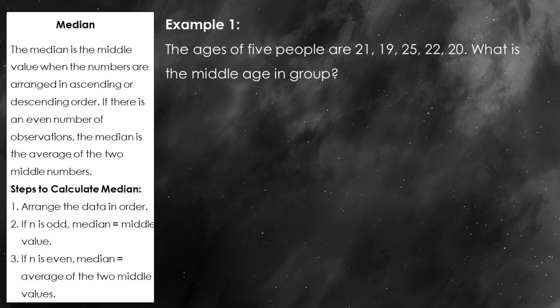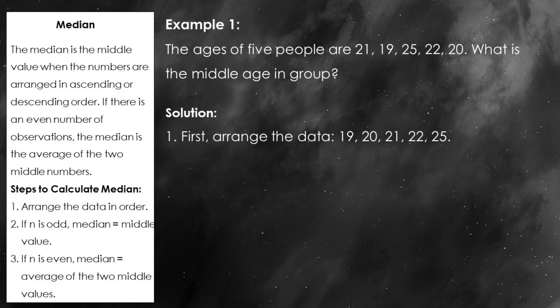Next up is the median. To find it, the first thing we do is arrange the numbers in order. If we have an odd number of data points, the median is just the middle value. But if we have an even number of data points, we take the average of the two middle values. For example, if we have the ages 21, 19, 25, 22, and 20, we first rearrange them: 19, 20, 21, 22, 25. The median is 21 since it's the middle value. Notice how the median gives us a sense of the middle without being thrown off by any extreme values. In data with outliers, the median can sometimes give us a better sense of central tendency than the mean.